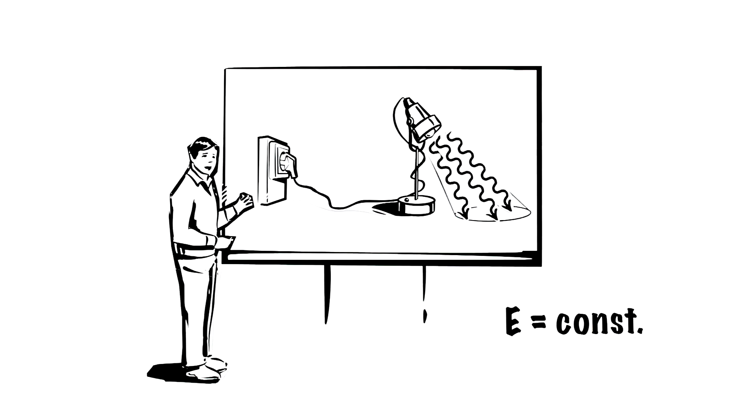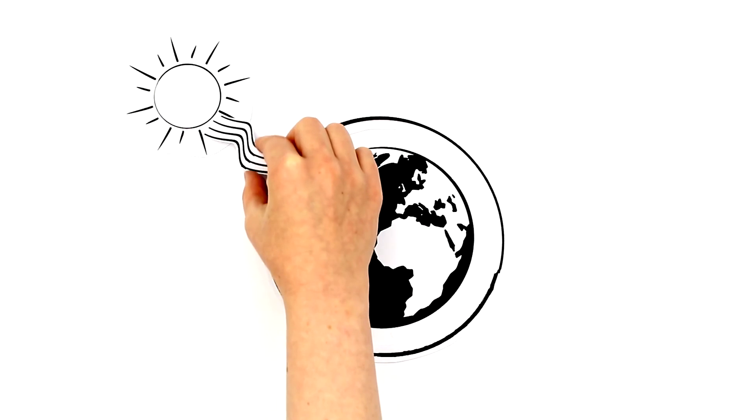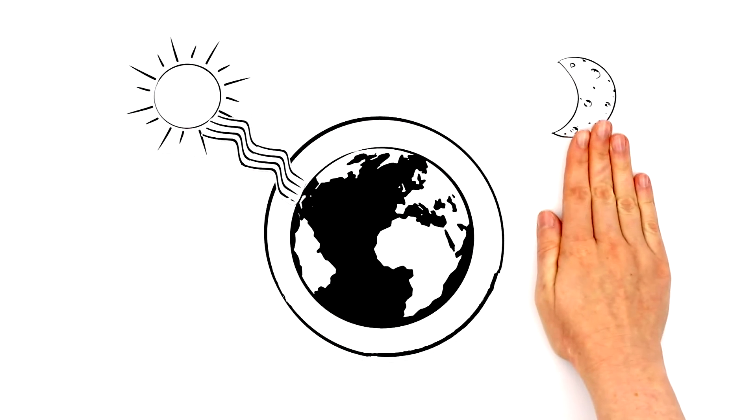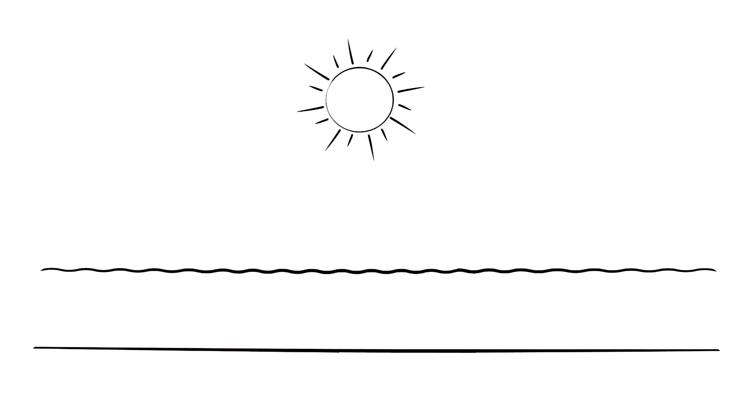Basically, this principle also applies to the global energy cycle. The energy in this case is, among other things, provided by the sun in the form of heat and by the moon in the form of gravitation. In the atmosphere, part of it is converted into the energy of motion and, for instance, passed on to the ocean. Other parts, on the other hand, are radiated back into space.